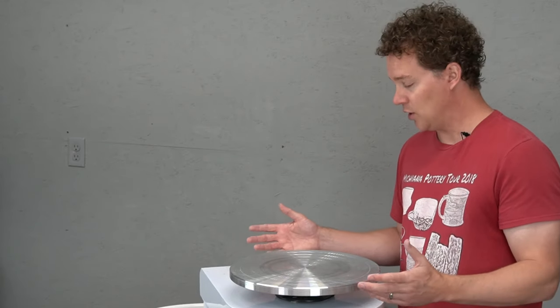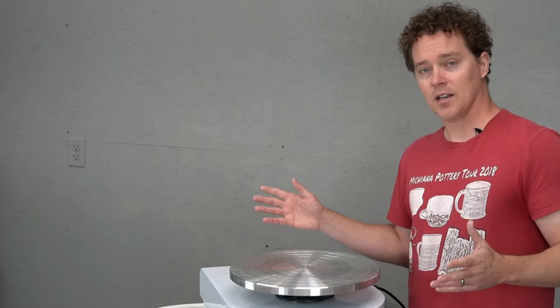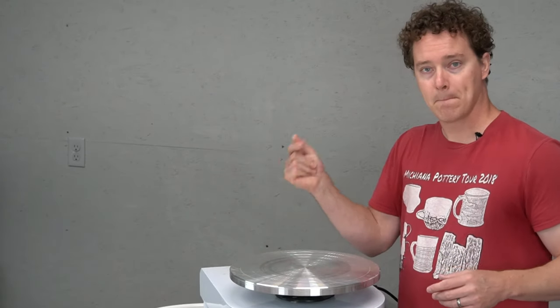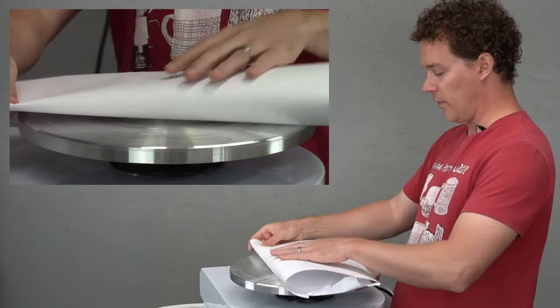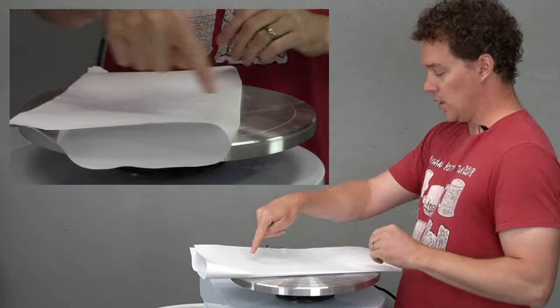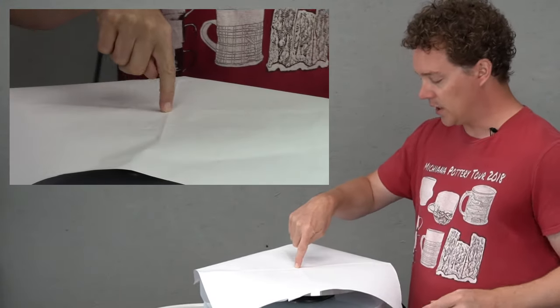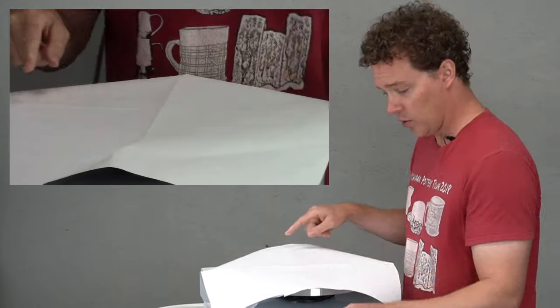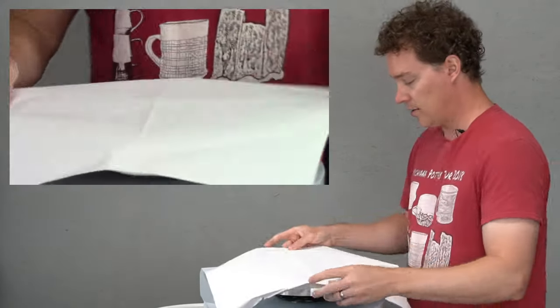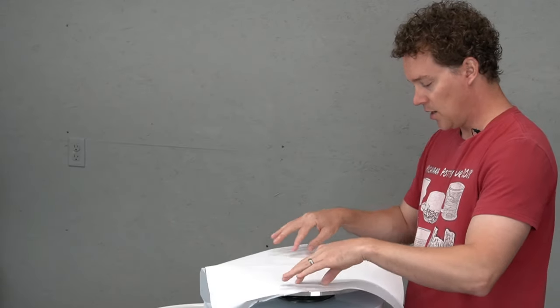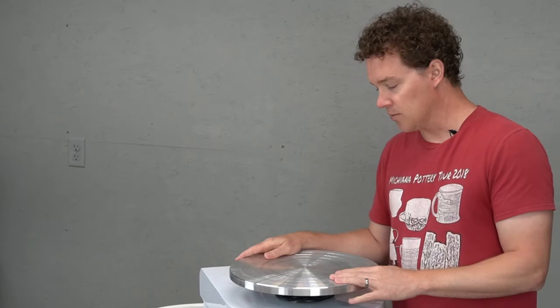Now there's a few ways to do that. You could make yourself a paper template, get some paper and trace around your wheel head, cut it out, fold it in half a couple different directions making sure the two edges match up. That will give you like a center point. Measure out your 10 inches, or you could even kind of mark out on your bat where the holes are and then you've got your nice straight line. But I mean that seems like a little extra work to me.